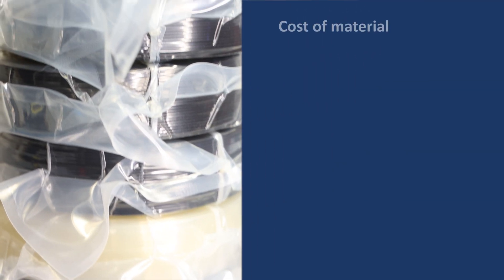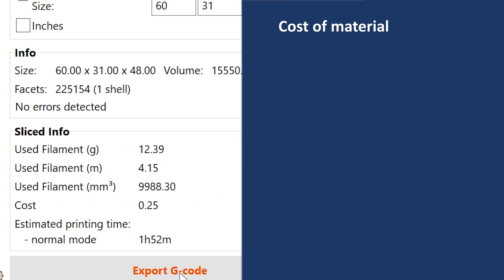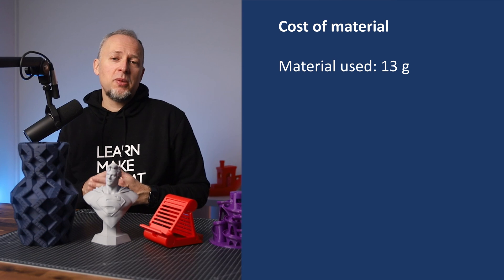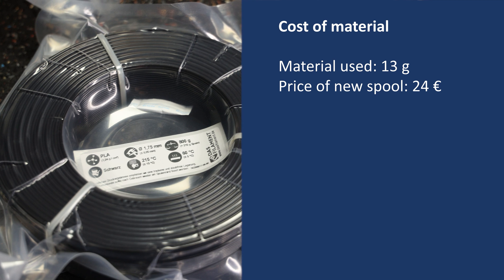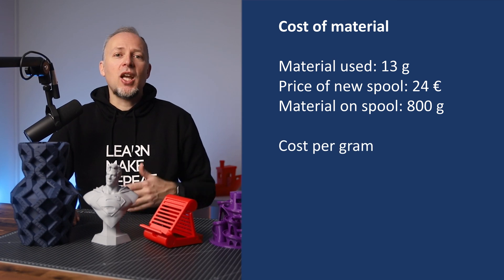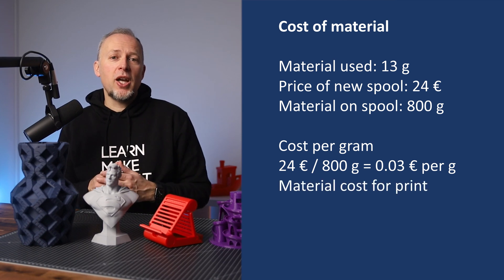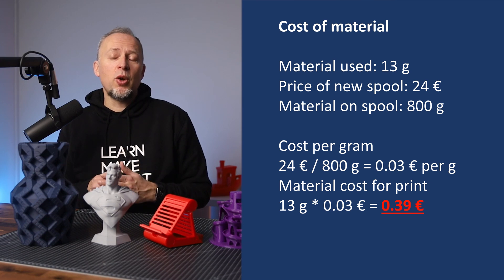First there is of course the cost of the raw material, the filament that is used for the print. All slicer programs will tell us how much filament gets used after the slicing has been done. Our example Benchy print will use an estimated 13 grams of filament. The spool costs 24 euro including shipping and has 800 grams of filament on it. So 24 divided by 800 gives us 3 cents per gram. Our print has 13 grams multiplied by 0.03 euro, meaning the raw material costs 0.39 euro.